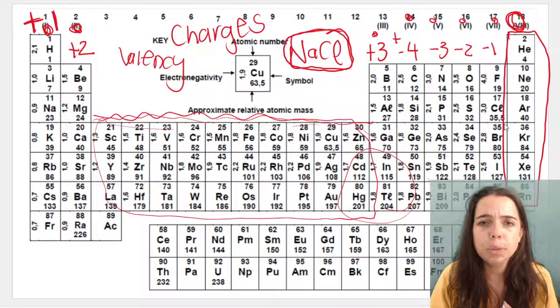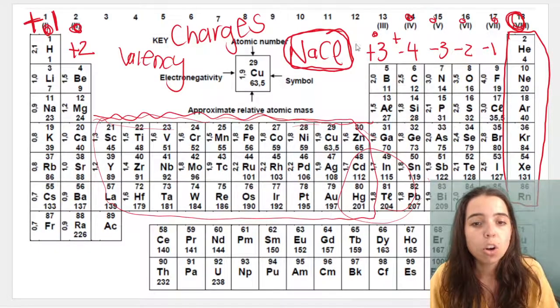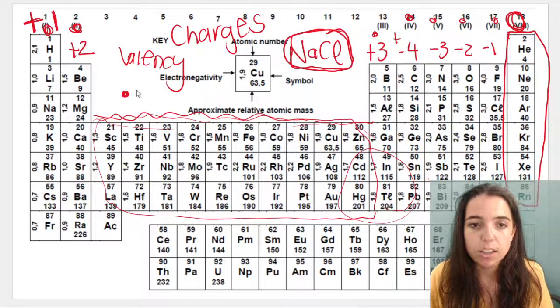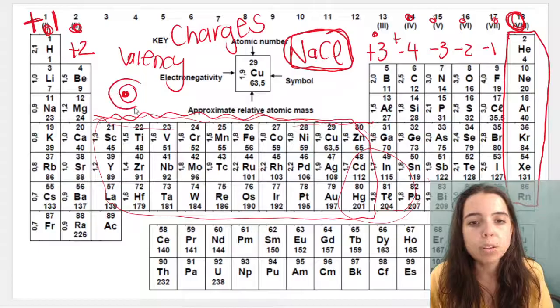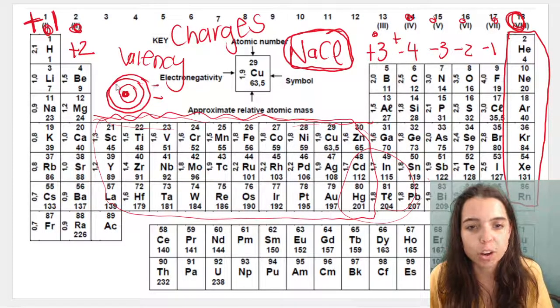Now, ma'am, what do you mean by outer energy levels? Remember, atoms contain a nucleus in the middle with protons and neutrons. Then, in the outer orbitals, or the outer energy levels, they contain electrons, which are negative.